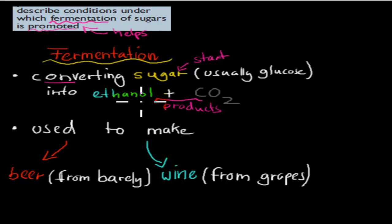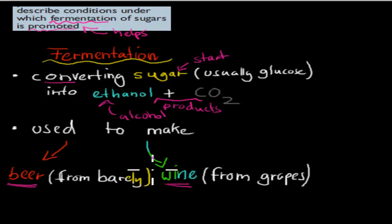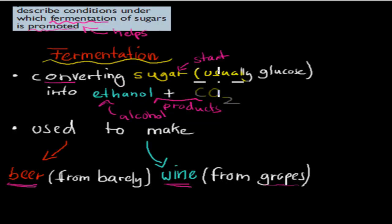We talked about ethanol being a good solvent and that it can be used as fuel. But there's also another reason why people want to make ethanol — because ethanol is an alcohol. It's used to make both beer and wine. We use the sugar from barley to make beer, and the sugar from grapes to make wine. Fermentation changes sugar into ethanol, and we produce carbon dioxide as a byproduct.